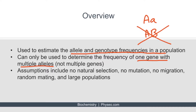For example, it can be used to determine the frequency of big A and little a, but not big A and big B. Big A and little a represent one gene with two alleles, whereas big A and big B represent two different genes.